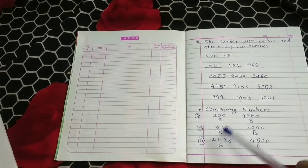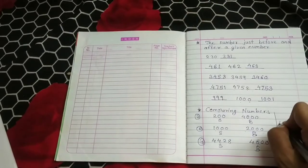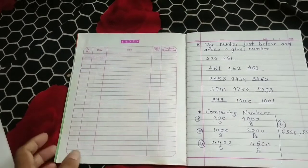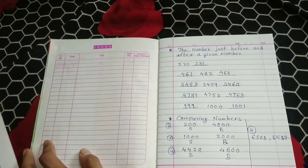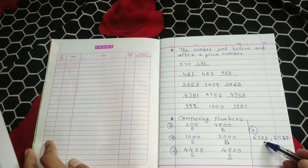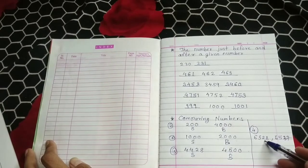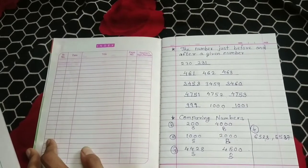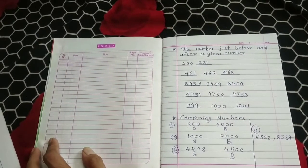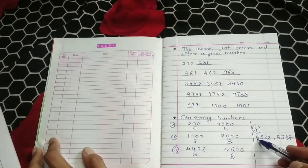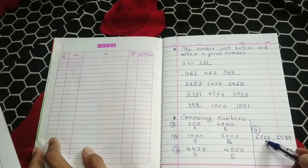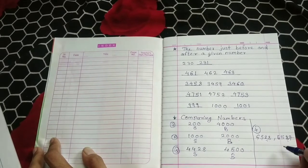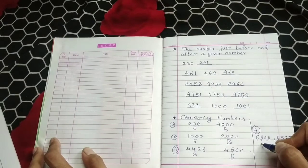If the thousands place is also the same and the hundreds place is also the same, then we have to look at the next place — the tens place. If the tens place is also equal, then we look at the units place. Here the thousands place is the same, the hundreds place is also the same, and the tens digit here is 2 and here is 3 — so the number with tens digit 3 is bigger.